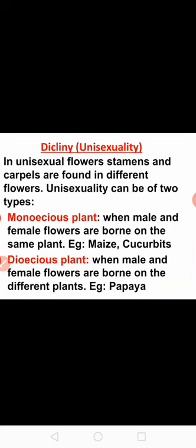Coming to the first type, that is decliny, also called as unisexuality. In this condition, the flower is always unisexual. Unisexual means the flower contains either stamen or carpel. Stamen is the male reproductive organ of the flower whereas carpel is the female reproductive organ of the flower.